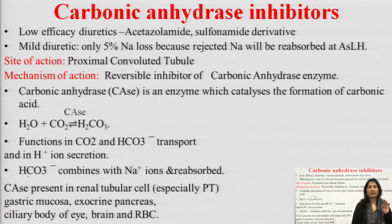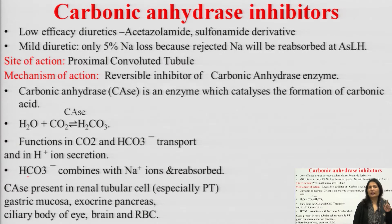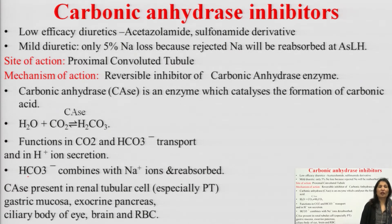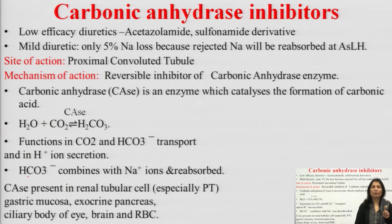Loop diuretics are known as highly efficacious diuretics. Thiazides are known as medium efficacious diuretics. And now, carbonic anhydrase inhibitors — this is the third class — which are low efficacious diuretics. They produce mild diuresis.